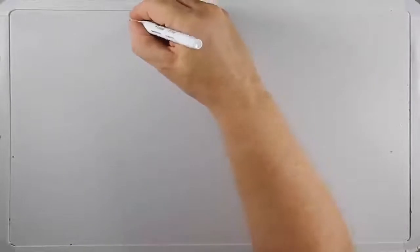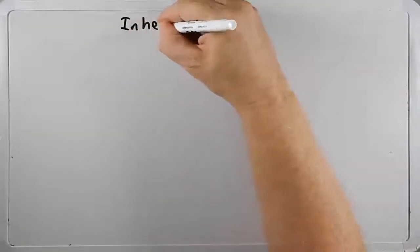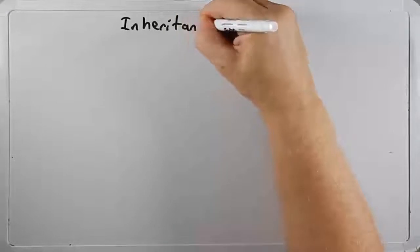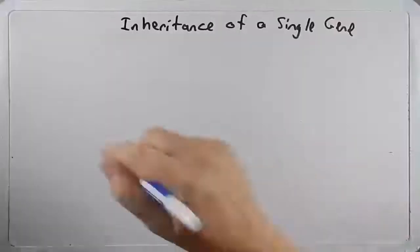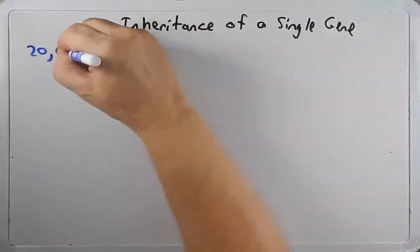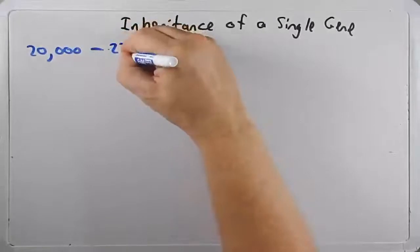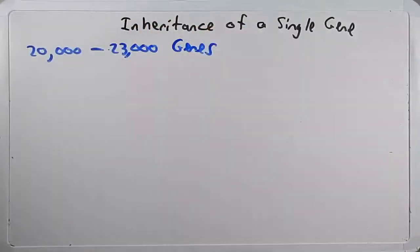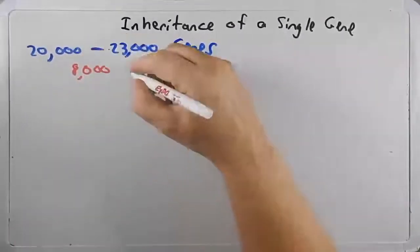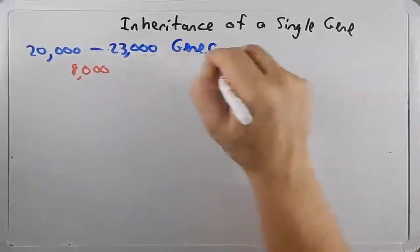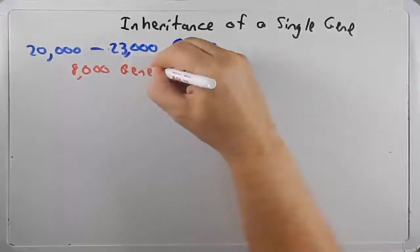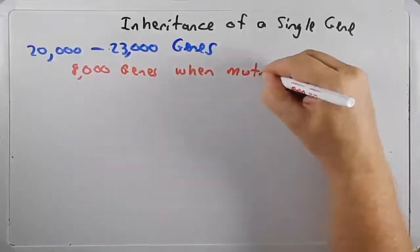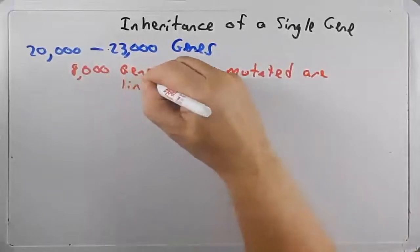I'd like to now focus in and talk about the inheritance of a single gene, just one gene. We know in humans we have somewhere between 20,000 to 23,000 genes. We know of this number of genes that when one of 8,000 or so are mutated, it can lead to diseases, inherited diseases. So 8,000 genes, when mutated, are linked to a disease.